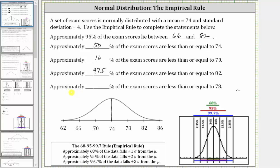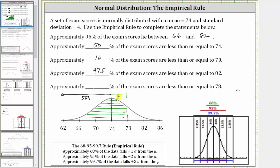For the last statement, approximately what percent of exam scores are less than or equal to 78? Notice 78 is one standard deviation above the mean. So the approximate percent of exam scores less than or equal to 78 is represented by this area here. We know approximately 50% of the exam scores are less than or equal to 74, and approximately 34% are between 74 and 78. Therefore the approximate percent of exam scores less than or equal to 78 would be 50% plus 34%, which is 84%.